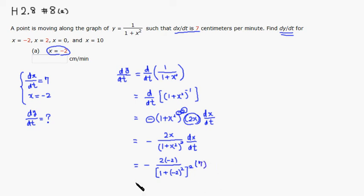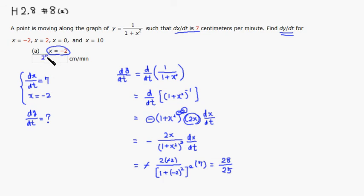Simplifying: the double negative makes it positive. 2 times 2 is 4, and 4 times 7 is 28 on top. On the bottom, negative 2 squared is 4, plus 1 is 5, and 5 squared is 25. So the answer is 28 over 25 centimeters per minute.